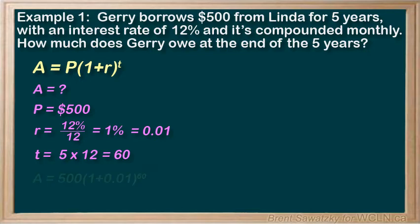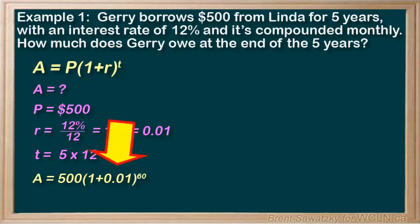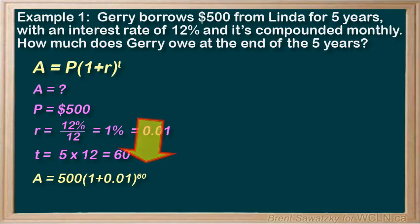So we're ready: A equals 500 times (1 plus 0.01) to the power of 60. Remembering order of operations, we do the brackets first — 1.01 — then the exponent, 1.01 to the power of 60, then multiply by 500. Many scientific calculators allow you to put the entire equation in and just hit enter. Either way, you'll end up with $908.35, rounded to the nearest cent.